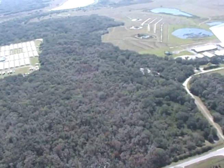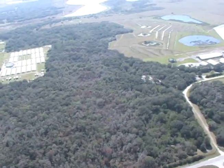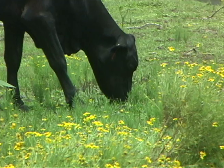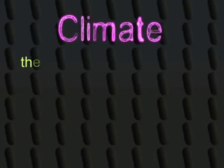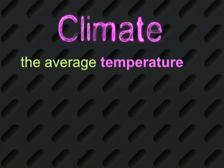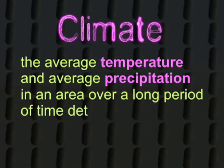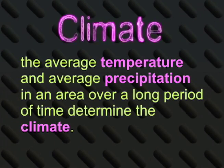Believe it or not, the amount of precipitation in an area combined with the average temperature determines what types of plants and animals live there. That's because the average temperature and precipitation in an area determine the climate. Now that I've told you what causes the weather, I'm going to see what tomorrow will bring. I'm hoping for a movie day.